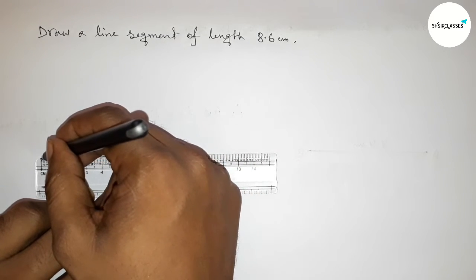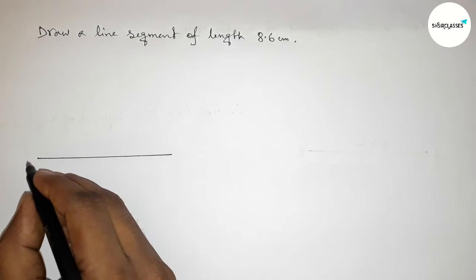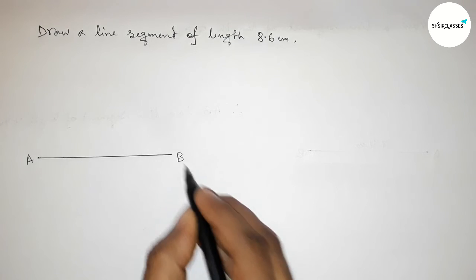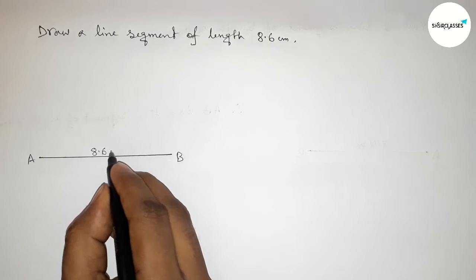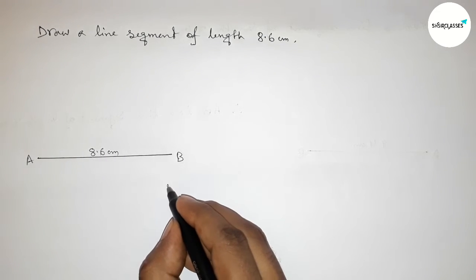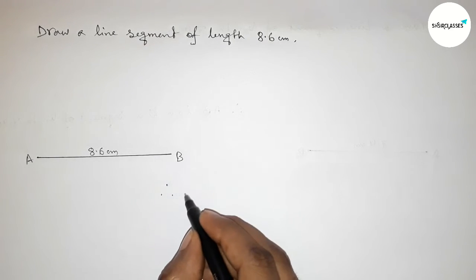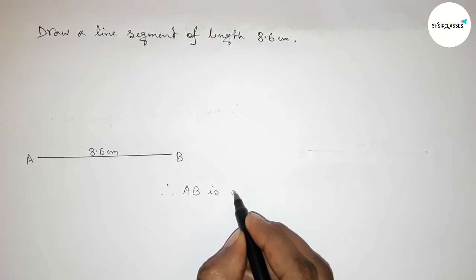and joining the line perfectly. So now taking here point A and here B. AB is a line segment of length eight point six centimeters. Therefore, now we can say that AB is a line